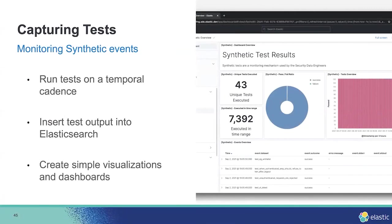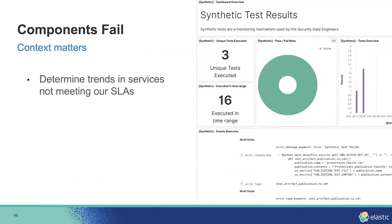One thing we've started doing is writing test results from CI into Elasticsearch — which is not an APM feature, but worth mentioning. We run our tests on a temporal cadence and put all the test output into Elasticsearch. We then create simple visualizations and dashboards with Lens, and this has given us context on what we need to keep an eye on, improve code quality, improve reliability, and provide better service and meet our SLAs.